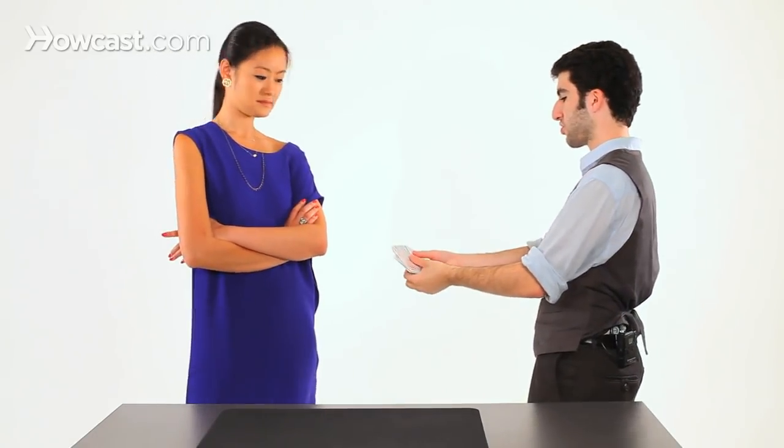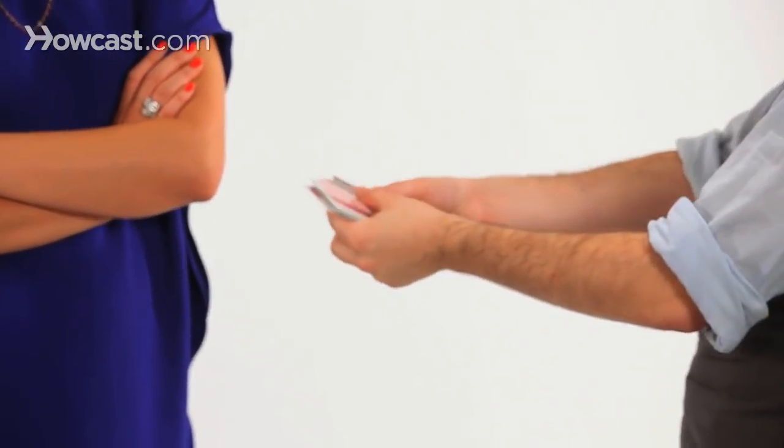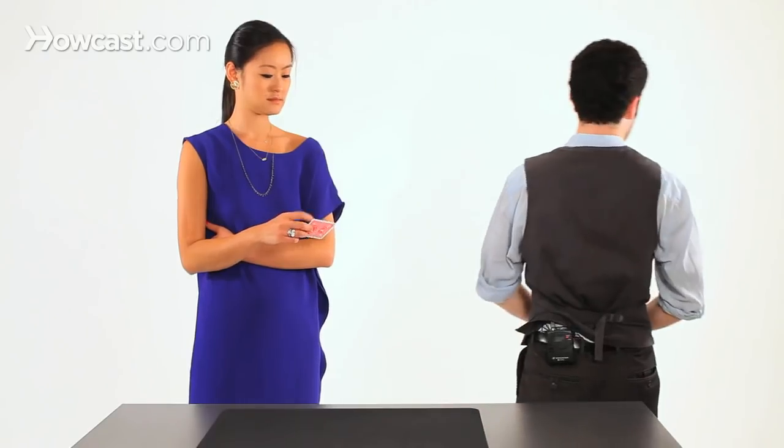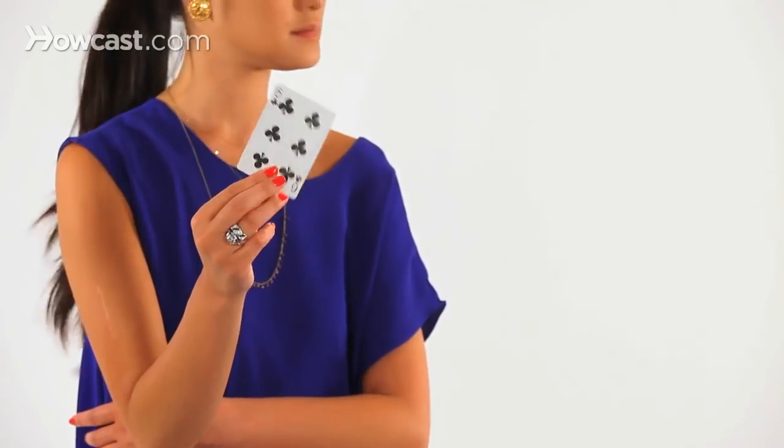I use the bottom card, the nine of clubs in this case. So that when she selects her card, I already know the bottom card. She selects a card. Take whichever one you want. Right? Show it to the camera. Place it right on top.